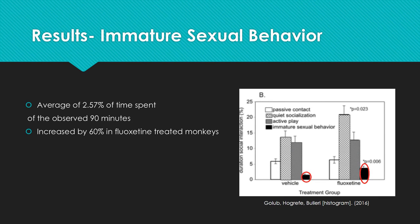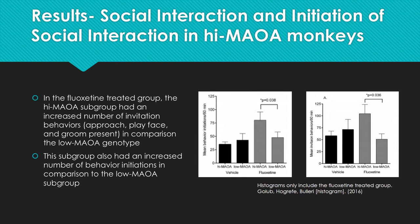Immature sexual behavior is a normal part of rhesus monkeys' play and stress relief pattern. It averaged 2.57% of observed time in vehicle monkeys and increased by 60% in fluoxetine-treated monkeys. In fluoxetine-treated monkeys, the high MAOA subgroup had an increased number of invitation behaviors — such as approach, playface, and grooming — compared to the low MAOA subgroup. Fluoxetine and MAOA genotype did not influence the number of behavior terminations.